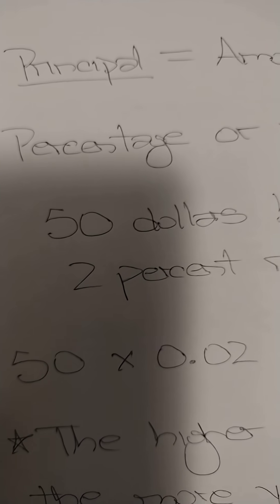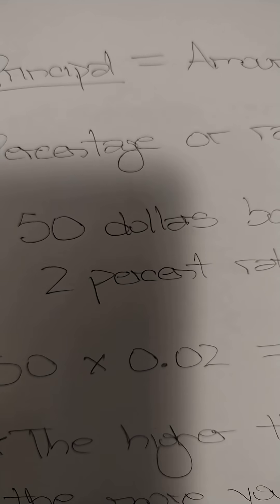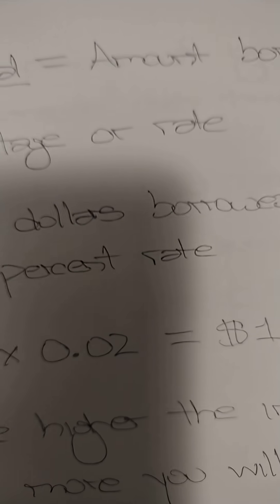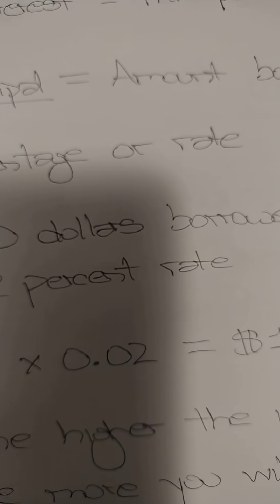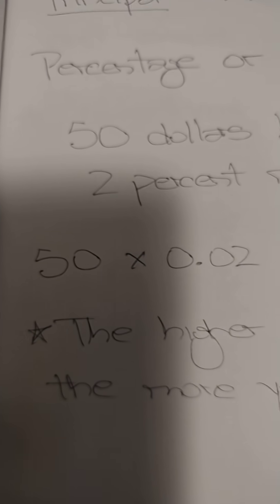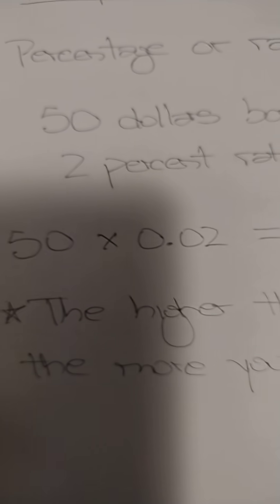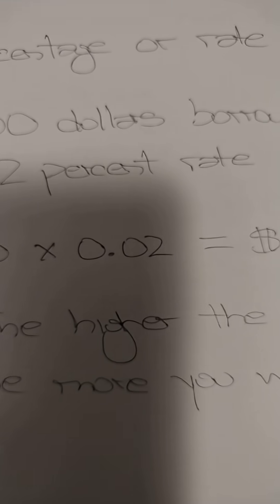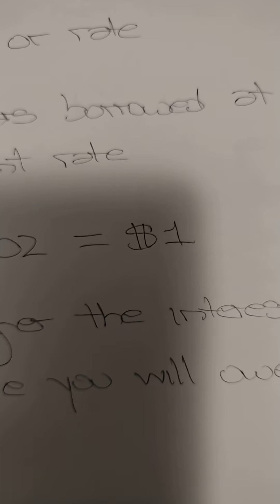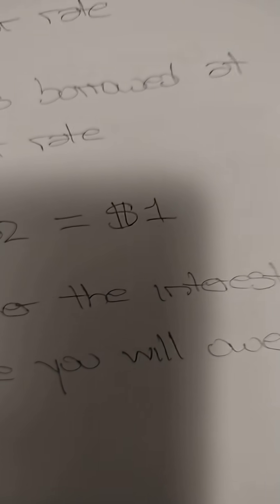Let's look at this very simple example. You borrow $50 from a bank or another institution and you're going to be paying a 2% rate. So all you have to do is multiply 50 times 0.02 to figure out the interest, which is going to be $1.